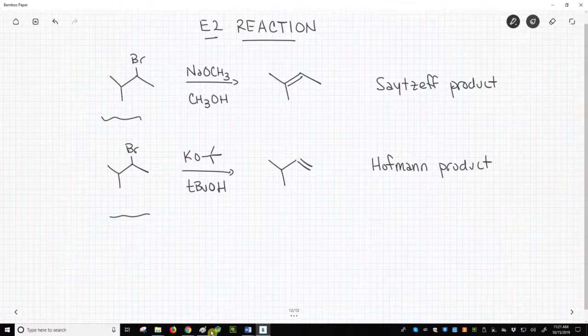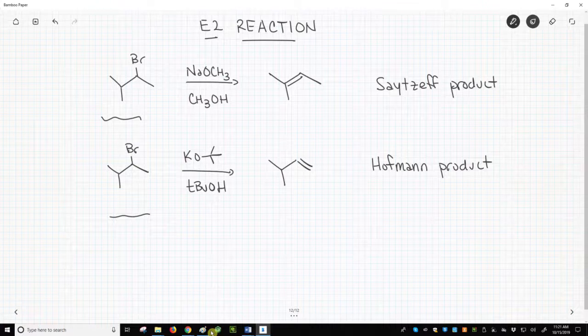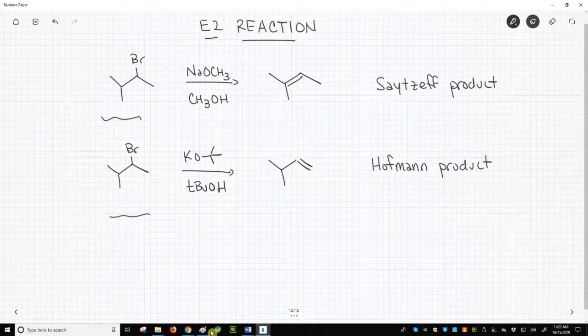In the top reaction, the base is sodium methoxide. While methoxide can be an SN2 nucleophile, a secondary halide is sufficiently hindered that the expected outcome is instead an E2.